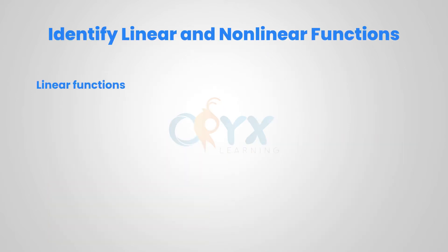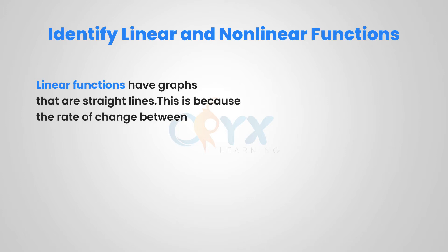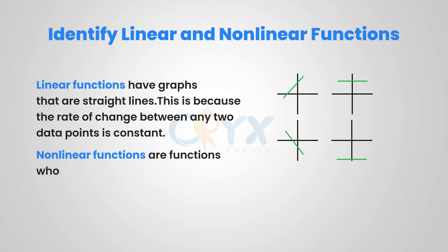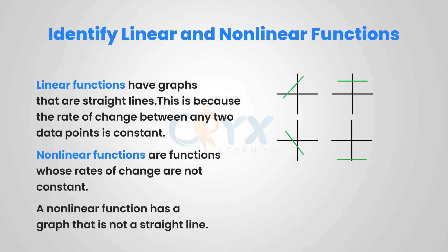Linear functions have graphs that are straight lines. This is because the rate of change between any two data points is constant. Some examples of linear functions are shown to the right. Non-linear functions are functions whose rate of change are not constant. A non-linear function has a graph that is not a straight line. Some examples of non-linear functions are shown to the right.